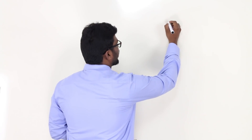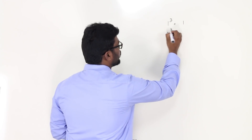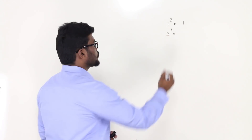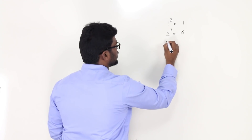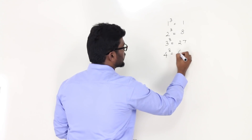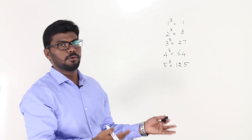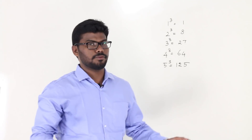How many of you know the cubes from 1 to 9? When I ask 9 cube, can you tell it quickly? You should. Let's look at the chart. 1 cube is 1, 2 cube is 8, 3 cube is 27, 4 cube is 64, 5 cube is 125. I'm sure most people will know the cube chart from 1 to 5 at least.